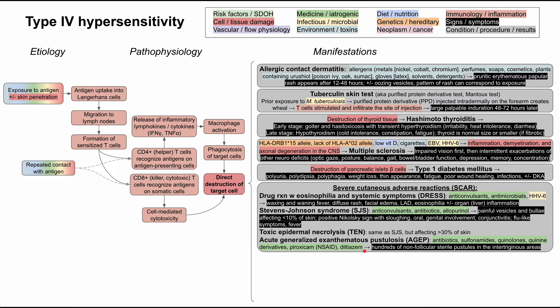The last severe cutaneous adverse reaction is acute generalized exanthematous pustulosis (AGEP), triggered by antibiotics and other drugs including sulfonamides, quinolones, quinine derivatives, piroxicam (an NSAID with a functional group that triggers this reaction), and diltiazem. The main symptom is hundreds of non-follicular sterile pustules in the intertriginous areas. Many type 4 hypersensitivity skin reactions are drug reactions, while others result from environmental or chemical product antigens.